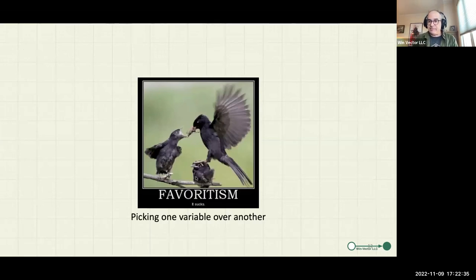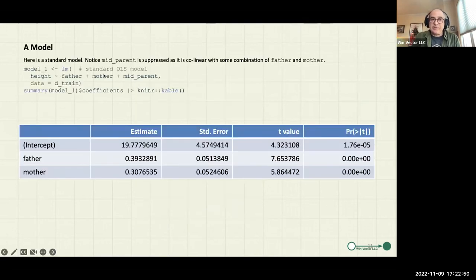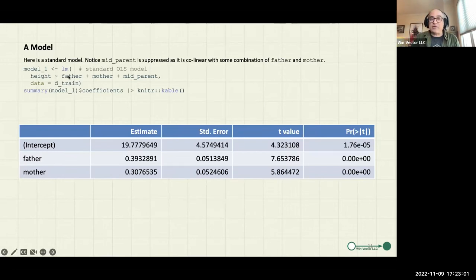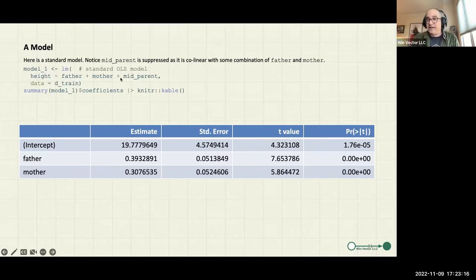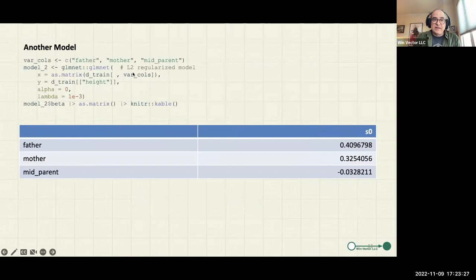The fitting procedure is unstable and cannot be implemented in the presence of collinear variables — it defends itself in a way that's unstable. Another run with slightly different data could cross out father instead. It probably crossed out the most informative variable — father plus mother together is better than just mid-parent, but mid-parent is the most informative single variable. Just because a variable got crossed out by the fitter doesn't mean it was a loser; it means jointly it had no information once father and mother were present, but it may have been the best variable all by itself.